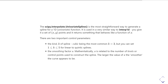The control parameters you get include the kind, or K, of the spline. Cubic splines are the most common, so that's K equals 3. You can set anything from 1 up to 5 for linear to quintic splines. There is also another parameter called the smoothing factor S. Mathematically, S is related to the number of knots or control points used to construct the spline. All you need to understand is that the larger the value of S, the smoother the curve is going to be.